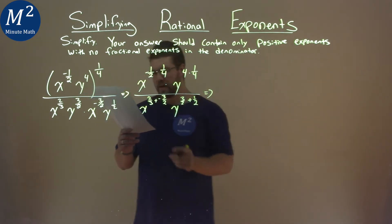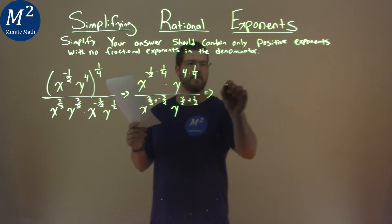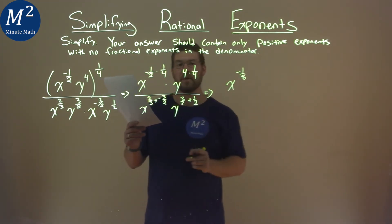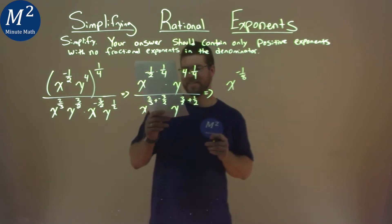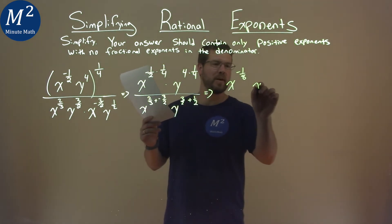So now let's simplify this numerator. Negative one-half times one-fourth, and we have x to the negative one-eighth, and four times one-fourth is just four-fourths, which is y to the first power.